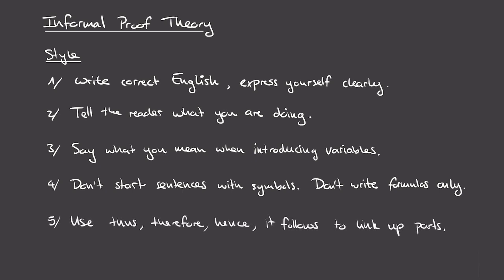As a final rule, you should use words like 'thus', 'therefore', 'hence', and 'it follows' to link up the different parts of your proof. If you want to say 'therefore', write the word 'therefore' rather than an implication symbol. Similarly, outside of a formula, if you want to say 'for all', write it out in words rather than using the logical quantifier symbol — the same goes for 'there exists'. These symbols should only appear inside formulas, not in the surrounding explanatory text.